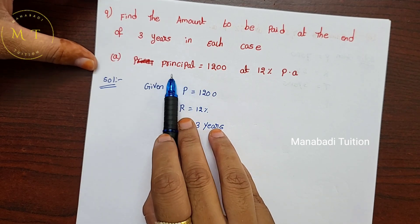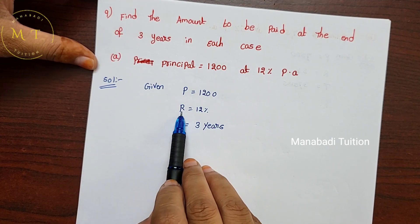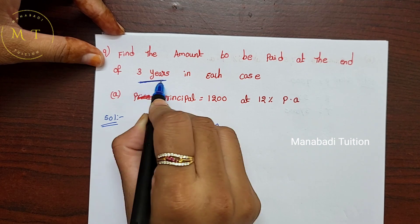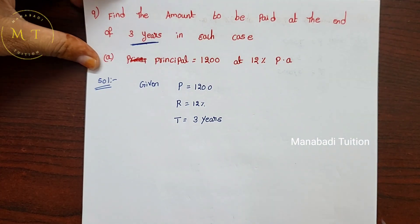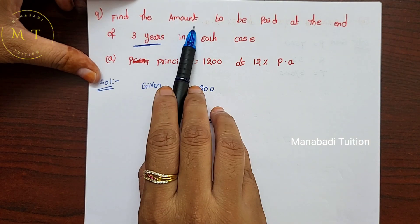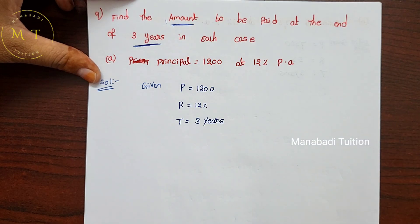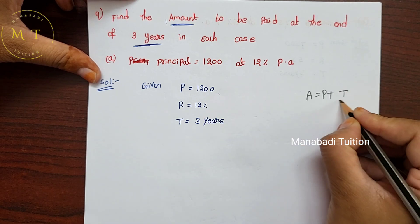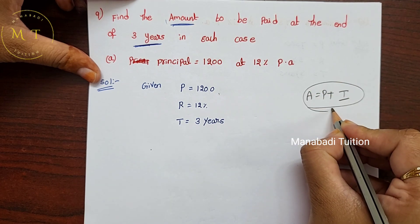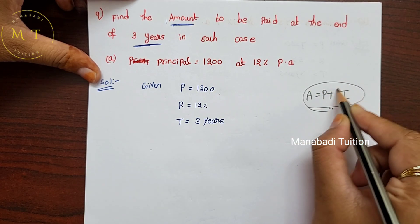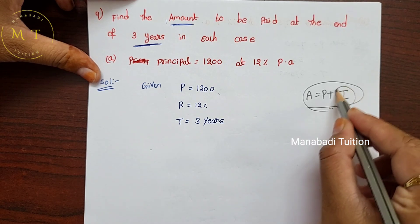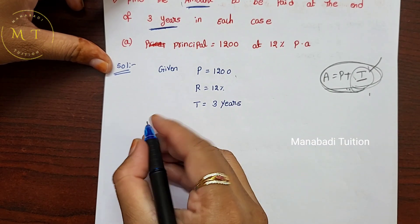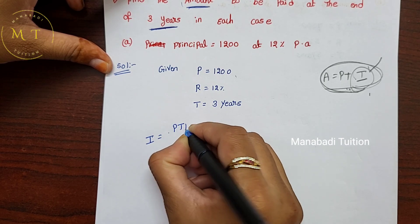Solution for question 9: Principal P = 1200, rate of interest = 12%, time = 3 years. We need to find the amount. First, find interest using the formula I = PTR divided by 100.